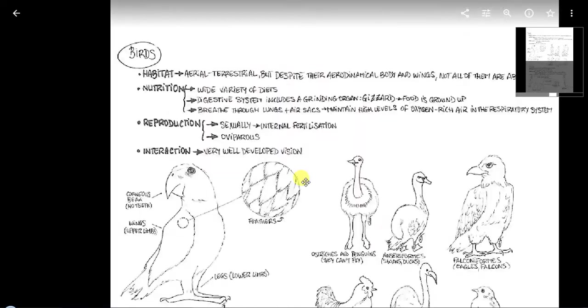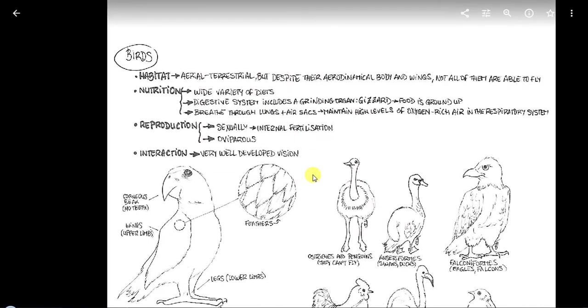Vamos, que estamos acabando ya con las aves. Habitat: Aerial, terrestrial, but despite a aerodynamical body and wings, not all of them are able to fly. Nutrition: Quite variety of diets. Digestive system includes a grinding organ, gizzard. Food is ground up. Breath through lungs. More air sacs. Maintain high levels of oxygen-rich air in the respiratory system. Reproduction: Sexually, they have internal fertilization and they are oviparous. Interaction: Very well developed vision.